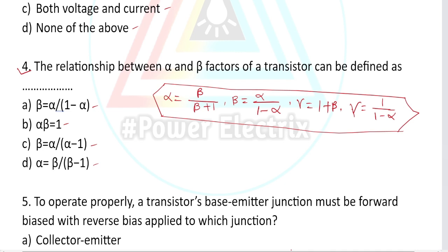So the correct answer for the alpha-beta relationship question: beta equal to alpha by 1 minus alpha. Option A is correct. Option B (alpha times beta = 1), option C (beta = alpha/alpha minus 1), and option D (alpha = beta/beta minus 1) are all incorrect. Option A is correct.